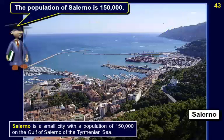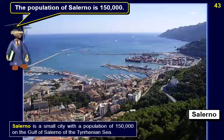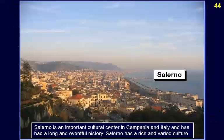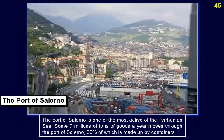Salerno is a small city with a population of 150,000 on the Gulf of Salerno of the Tyrrhenian Sea. Salerno is an important cultural center in Campania and Italy and has had a long and eventful history. The port of Salerno is one of the most active of the Tyrrhenian Sea, with some seven million tons of goods a year moving through, sixty percent of which is made up by containers.